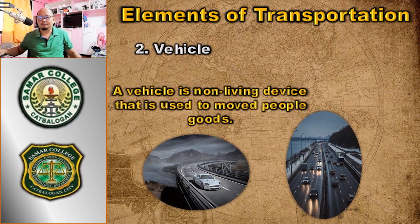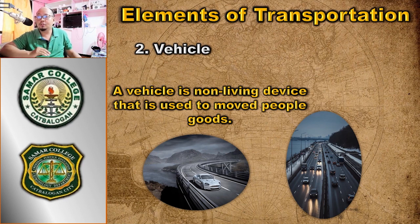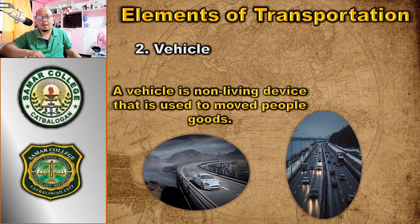The second element is vehicle — a non-living device used to move people and goods. Unlike infrastructure, a vehicle moves along with the cargo. Of course, vehicles require drivers or riders to operate, and they travel along the infrastructure. For example, a vehicle cannot cross a river to another location without a bridge, which is part of the infrastructure.